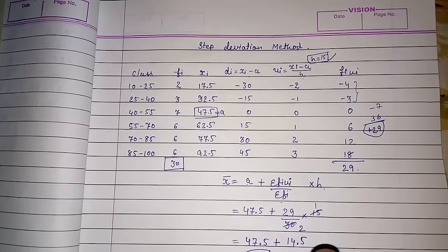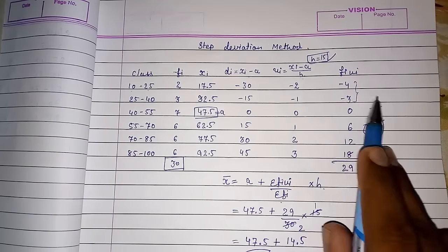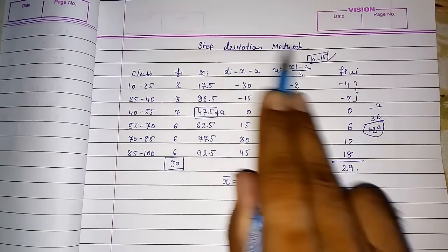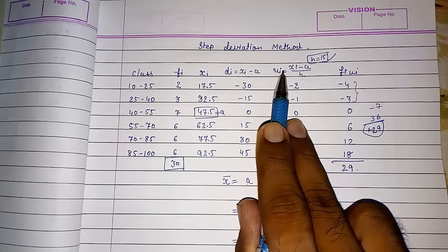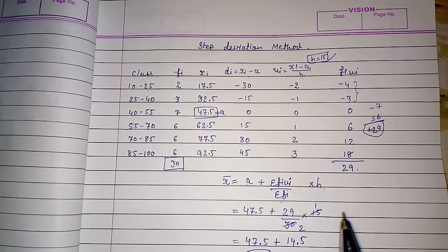This way we can solve step deviation method. Just we have to add this. And then we have to do our calculation. And here we have to add H in our assumed mean method. Thank you so much for watching my video. If you like it please subscribe to my channel so that I can bring more such videos for you. Thank you so much.